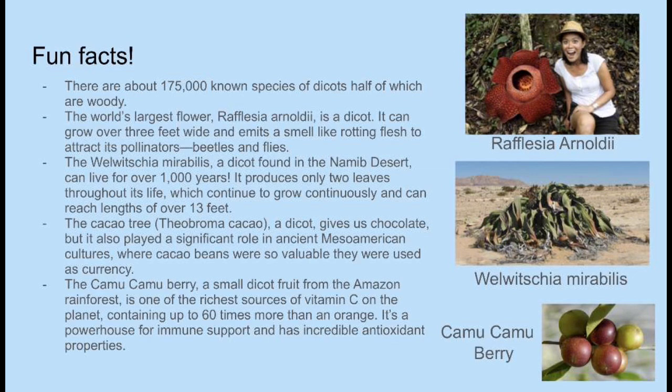The cacao tree, Theobroma cacao, a dicot, gives us chocolate, but it also plays a significant role in ancient Mesoamerican cultures where cacao beans were so valuable they were used as currency. The camu camu berry, a small dicot fruit from the Amazon rainforest, is one of the richest sources of vitamin C on the planet, containing up to 60 times more than an orange. It's a powerhouse for immune support and has incredible antioxidant properties. You can see this berry on the side of the screen.